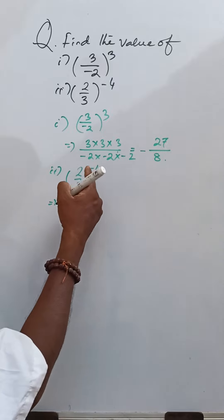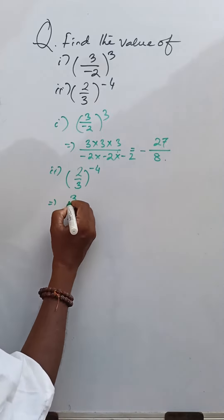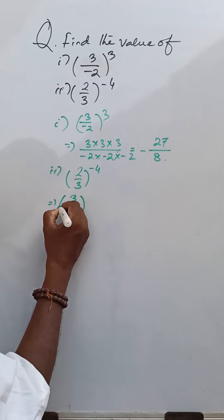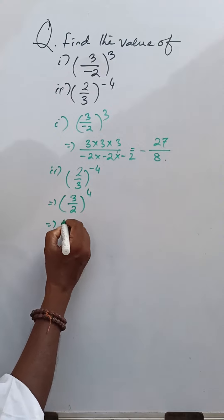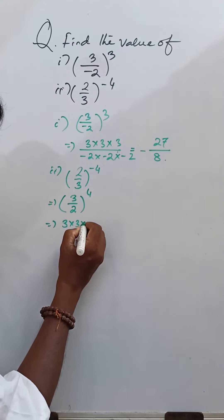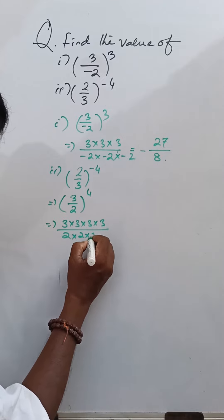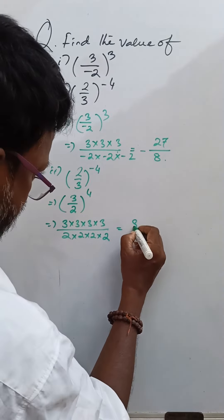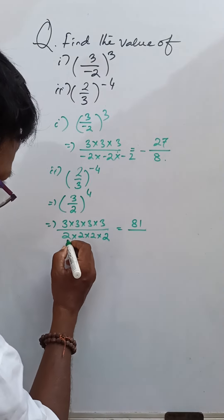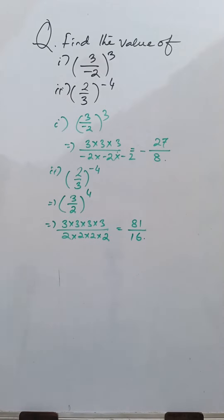Now, removing the minus in power, then keeping it in reverse form, that is with power 4. So this is 3 into 3 into 3 into 3 divided by 2 into 2 into 2 into 2. This equals 81 divided by 16 as the answer.